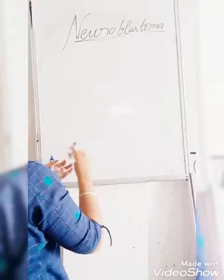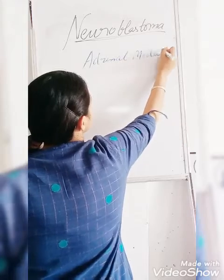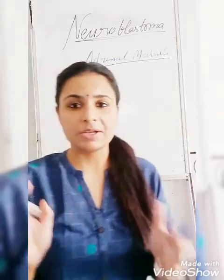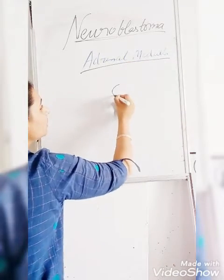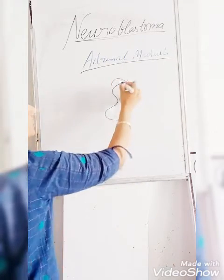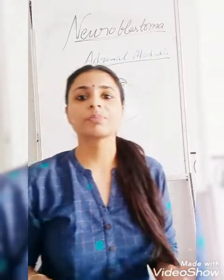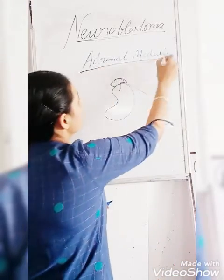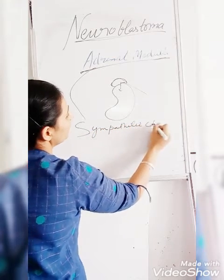It is an aggressive tumour of the adrenal medulla. It is a malignant tumour that will spread to distant parts. As you can see, this is the kidney and this is the adrenal gland — so this is the tumour of that part. It will spread to the kidney, pancreas, liver, bones, and orbit — different structures adjacent to the adrenal — and it will spread along with the sympathetic chain.